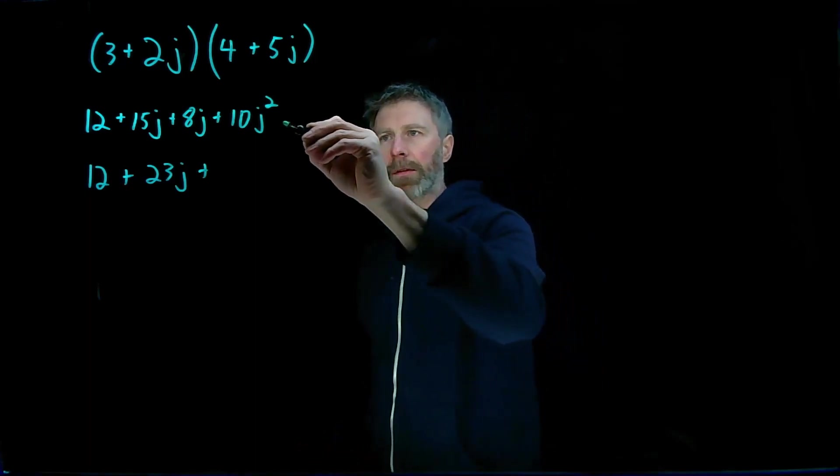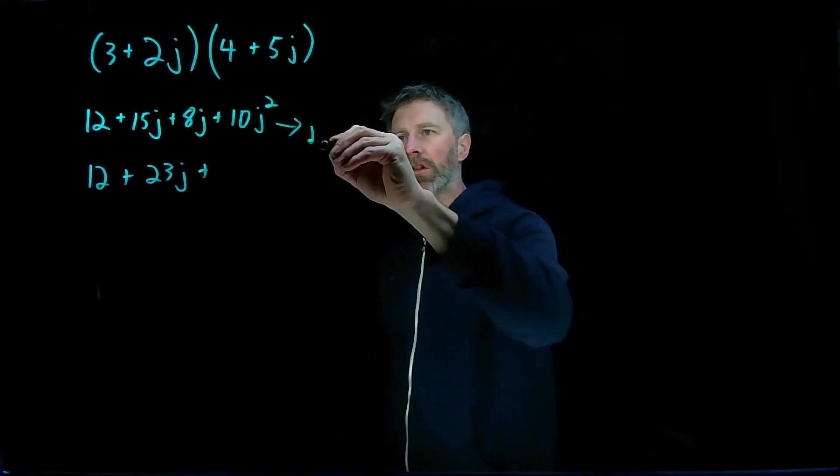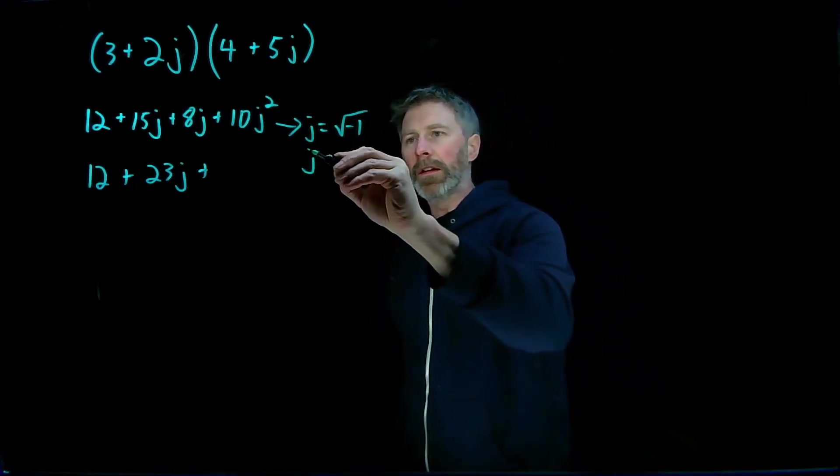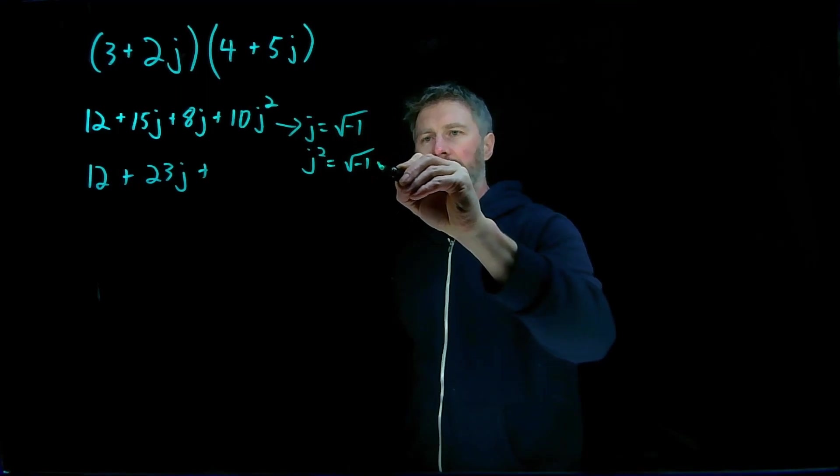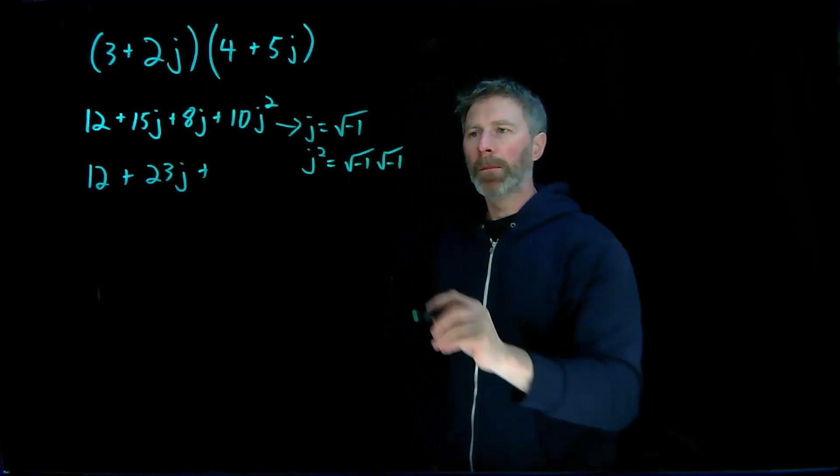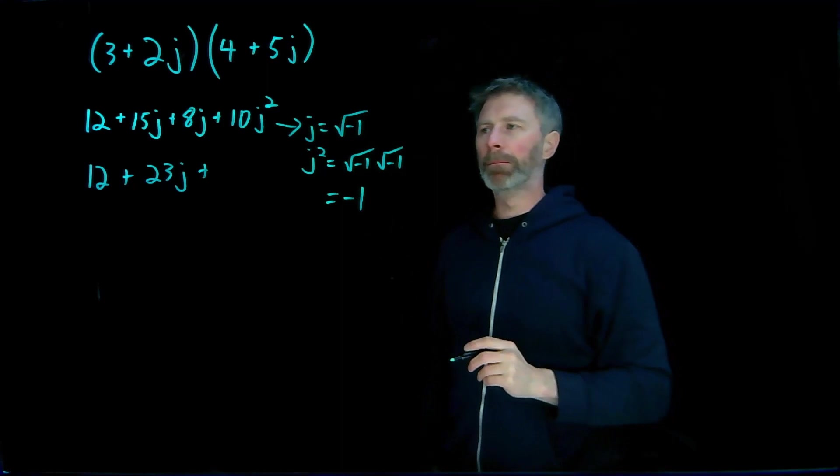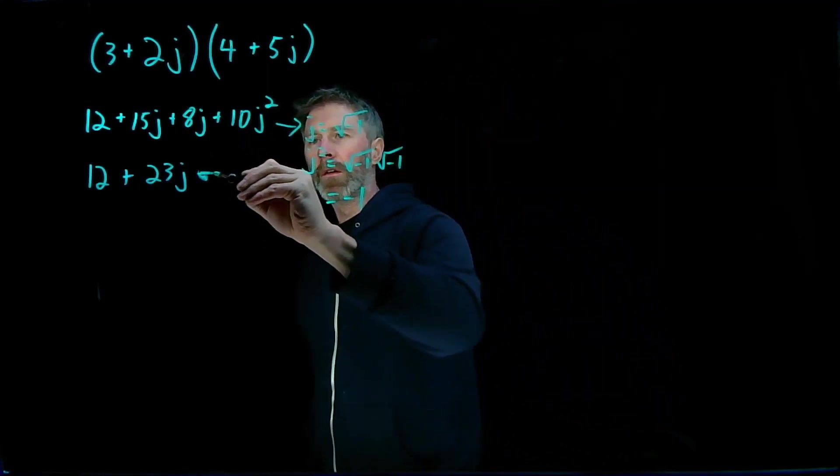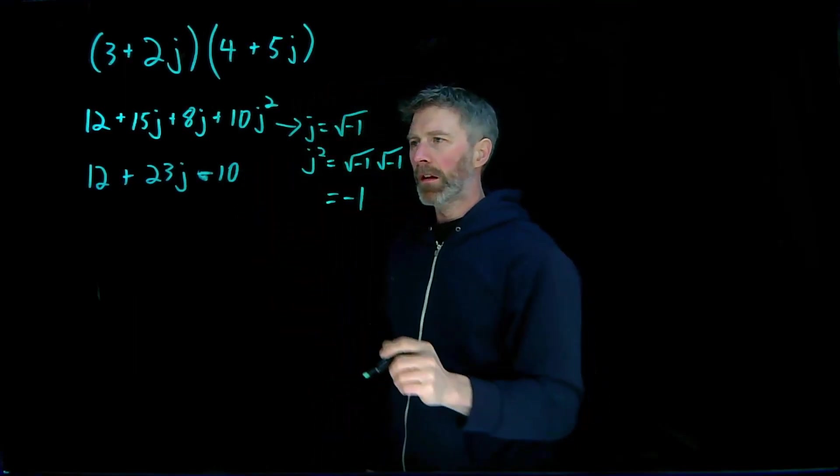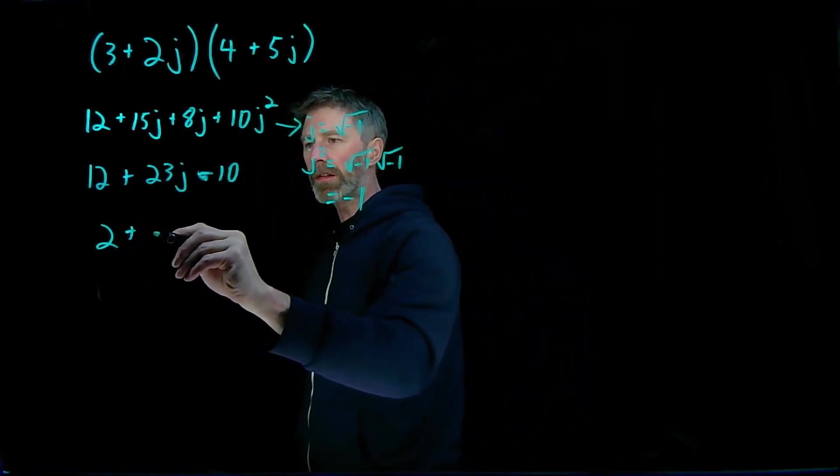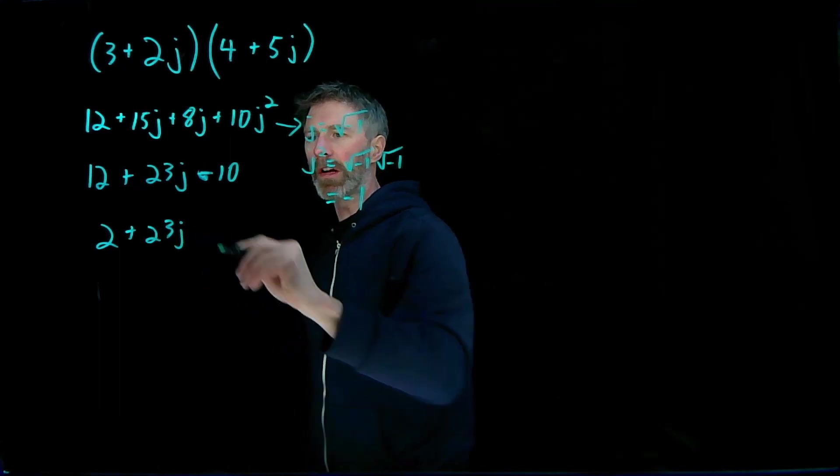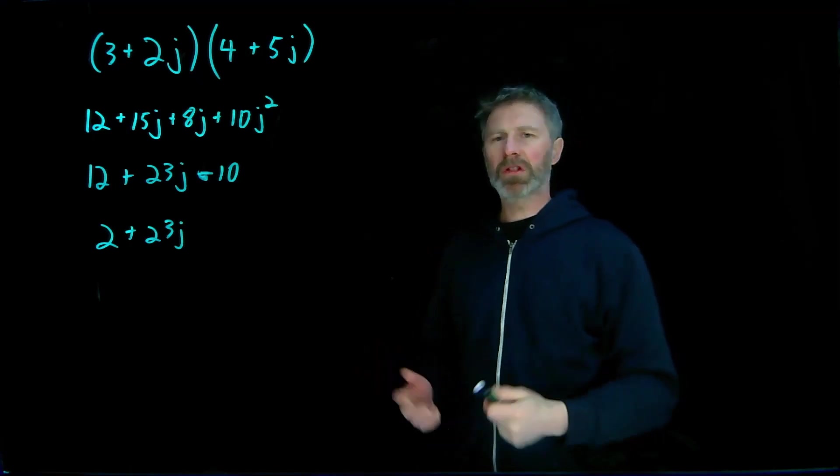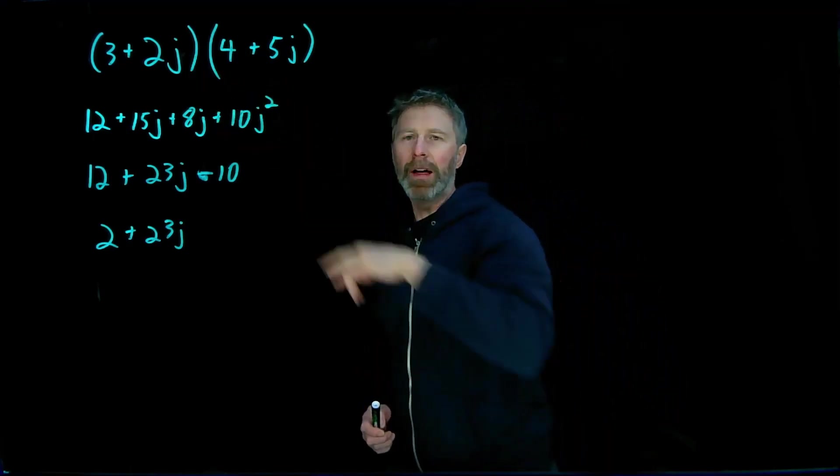Well, what is j squared? If you remember, j is equal to the square root of negative 1. So j squared then is square root of negative 1 times the square root of negative 1, which simply equals negative 1. So what I end up with here is not plus 10, it's actually going to be minus 10. So I end up with 2 plus 23j. Fairly simple to do, just a few steps in the expansion of that multiplication.